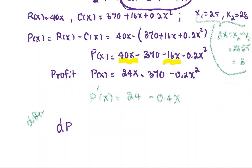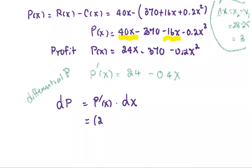That we use to approximate the change in profit. So dP is P prime of x multiplied by dx. The P prime we found as 24 minus 0.4x. The dx is the change in x, which is 3. And we're going to evaluate at the beginning point of x, which is x1 or the number 25.